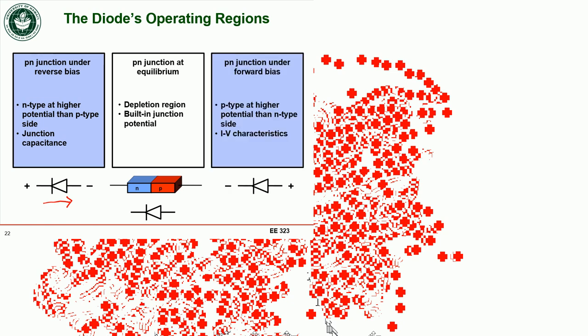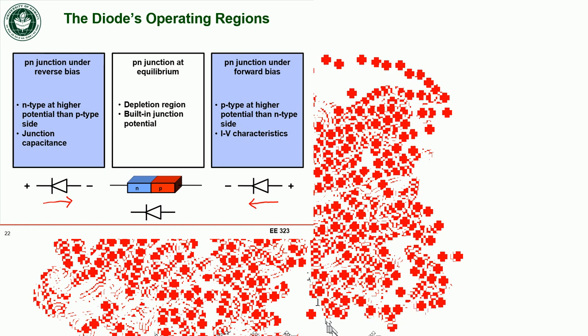In forward bias, the p-type side is at higher potential. Current flows in the direction of the diode arrow, and we can get significant current through the diode. We need to predict the current as a function of voltage across the diode. These two operating regions — reverse bias and forward bias — are the main modes we'll analyze.